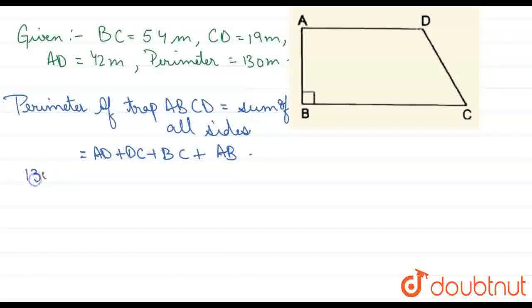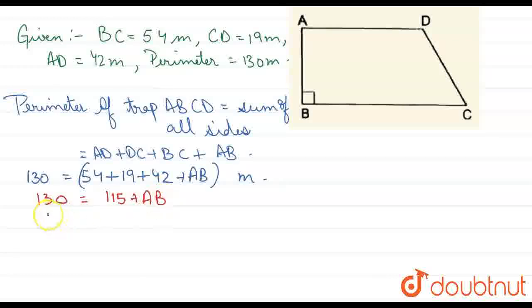The perimeter value is 130, which equals 54 plus 19 plus 42 plus AB meters. So 130 equals 115 plus AB, meaning 130 minus 115 equals AB. Therefore, AB equals 15 meters.